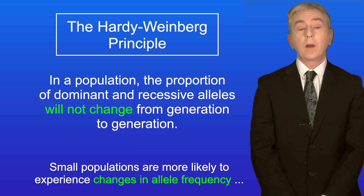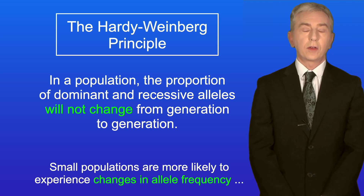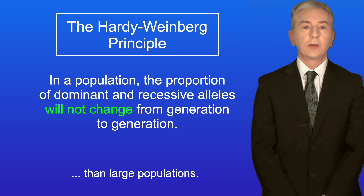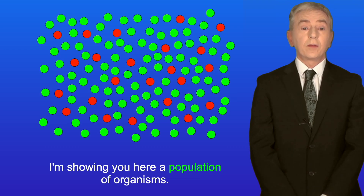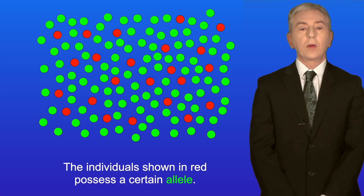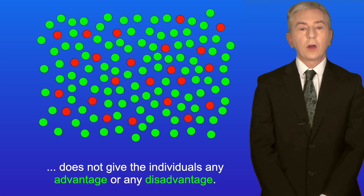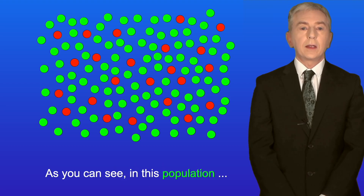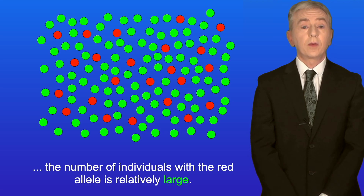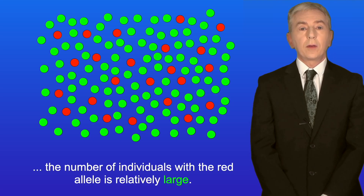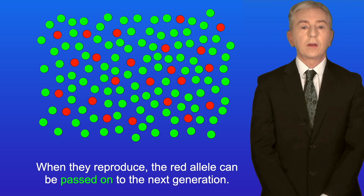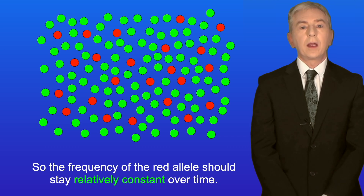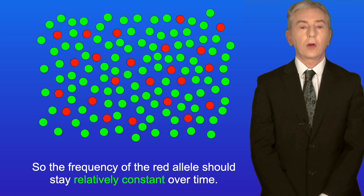Small populations are more likely to experience changes in allele frequency than large populations. Here is a population of organisms where the individuals shown in red possess a certain allele — one that does not give any advantage or disadvantage. In this large population the number of individuals with the red allele is relatively large, so when they reproduce the red allele is passed on, and its frequency stays relatively constant over time.